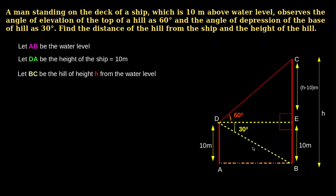DE is also X meters. To find DE, consider triangle BED. The trigonometric ratio that connects side DE, BE, and angle 30 degrees is tan 30 degrees. Here we are taking tan 30 degrees, which equals opposite by adjacent, that is BE by DE, which equals 10 by X.